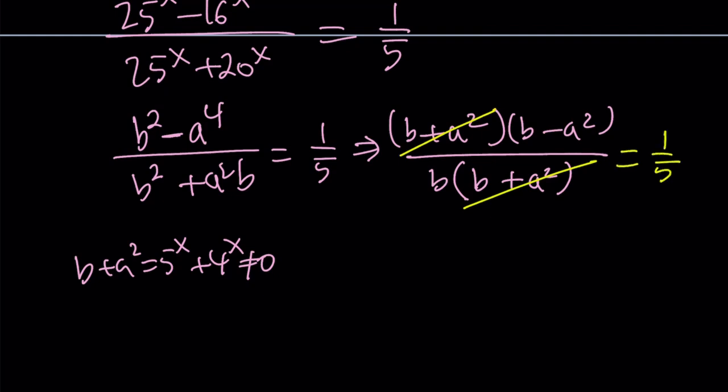Now, let's do some cross-multiplication. 5 times b minus 5 times a squared equals 1 times b, which is b.